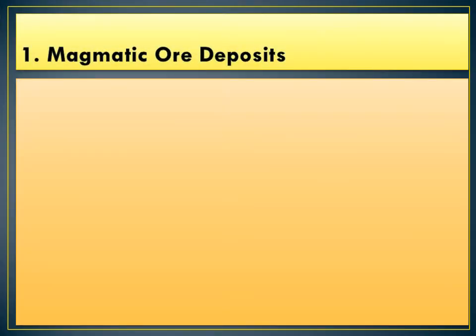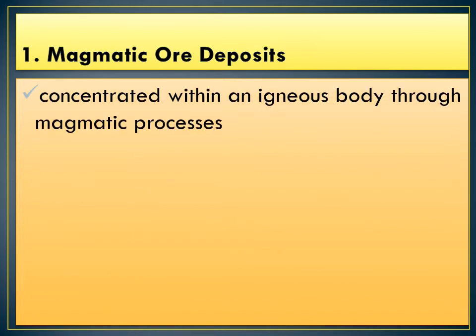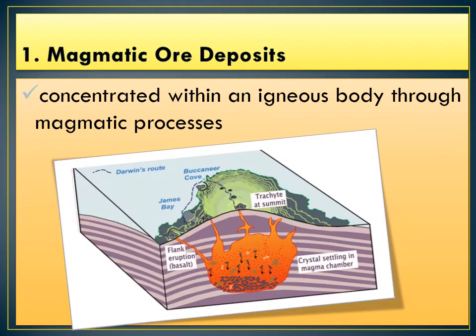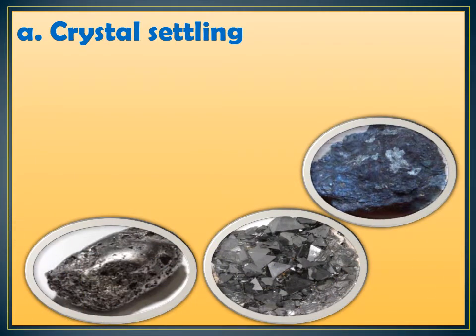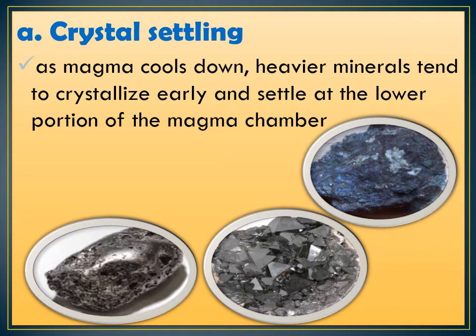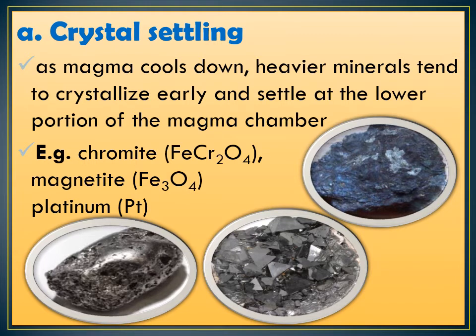First, let's talk about the minerals that are formed from magmatic ore deposits. These are the valuable substances that are concentrated within an igneous body through magmatic processes. Those processes include crystal fractionation, partial melting, and crystal settling. In the crystal settling process, minerals tend to crystallize and settle at the lower portion of the magma chamber as magma cools down inside the Earth. This includes chromite, the first picture on the right, magnetite, the second picture, and platinum, the last picture.